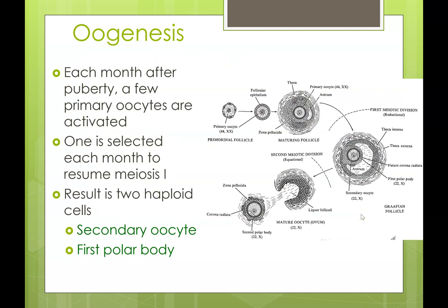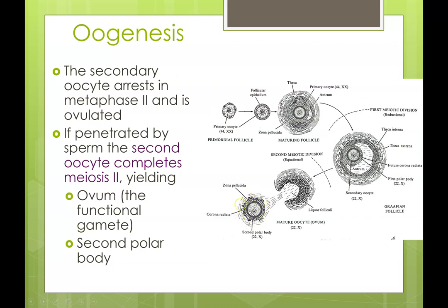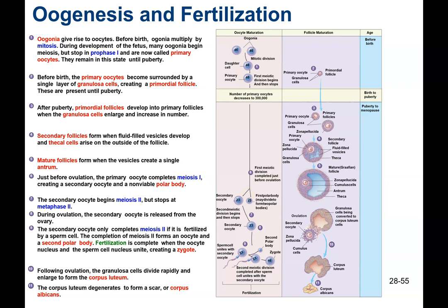Each month after puberty, a few of the primary oocytes become activated and one is selected to resume meiosis one. The antrum gets created in our Graafian follicle, that egg is pushed to one side, and the other constituent it divided into was a polar body made up of cytoplasm that will eventually disintegrate. The egg is pushed out — this is ovulation. We then see our secondary oocyte and a second polar body created. At this point the oocyte stops in metaphase two, continuing in hopes of meeting a sperm cell so it can complete meiosis two.